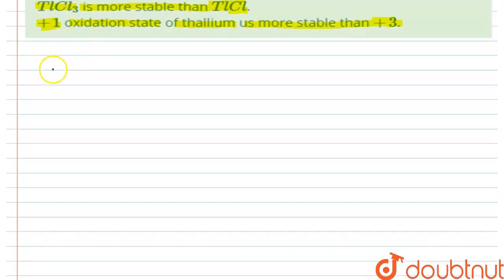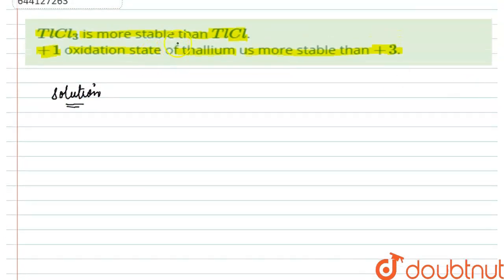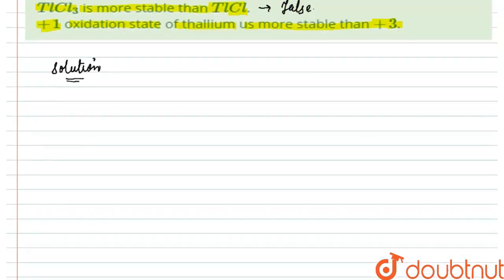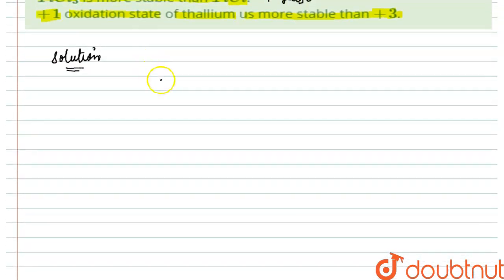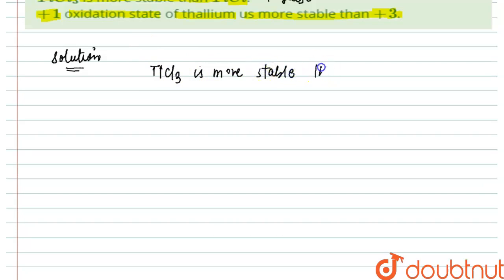Let us first start analyzing the first statement, which says that TlCl3 is more stable than TlCl. This is false. So this statement is incorrect.